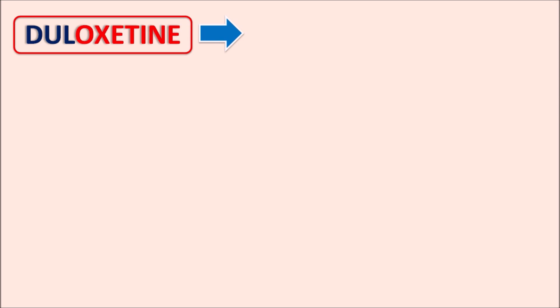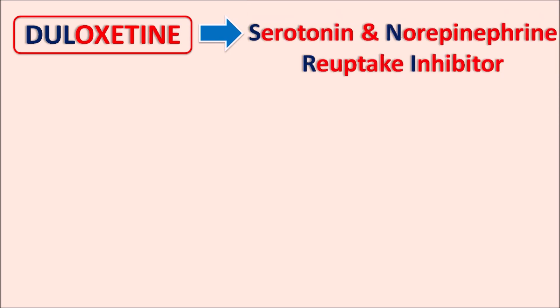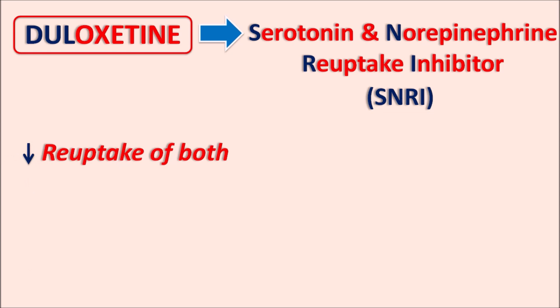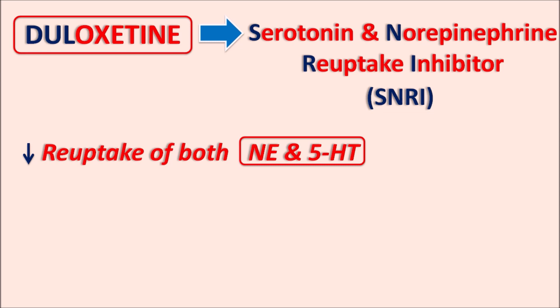What is this drug Duloxetine? Duloxetine is a drug related to serotonin as well as norepinephrine reuptake inhibitor, commonly known as SNRI. This drug inhibits the reuptake of both norepinephrine as well as 5-HT, that is serotonin. That's why it is called an SNRI — serotonin and norepinephrine reuptake inhibitor.